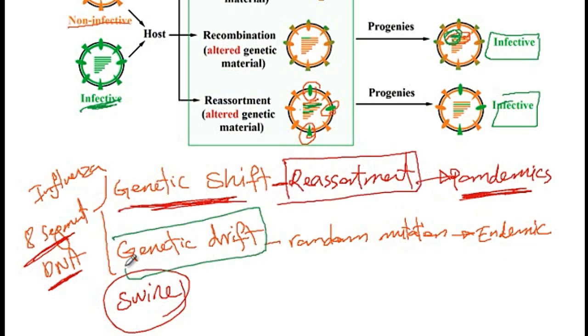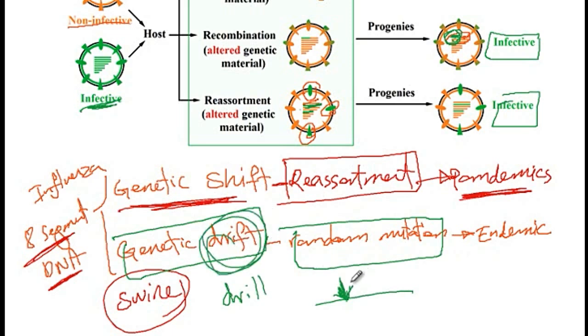So the way I memorize it is drift is like a drill. So you drill your DNA and cause a mutation right there. So that's how I memorize that genetic drift is associated with mutations inside DNA. And that concludes our discussion.